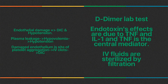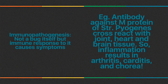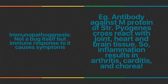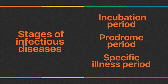Immunopathogenesis: it is the immune response to bacteria that causes the symptoms, not the bacteria itself. Examples include glomerulonephritis and rheumatic fever. Antibody against M protein of Strep pyogenes cross-reacts with joint, heart, and brain tissue, resulting in arthritis, carditis, and chorea. Stages of infectious disease: incubation period (between acquisition and onset of symptoms), prodrome (nonspecific symptoms), specific illness, and convalescence period during which illness abates and the patient recovers.